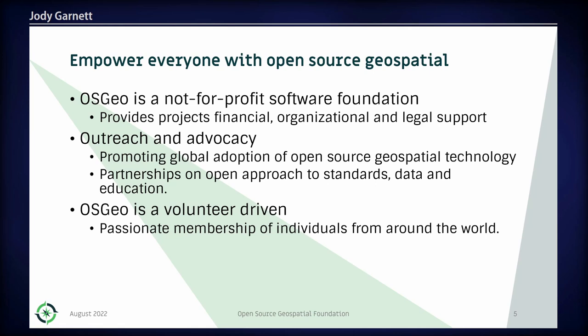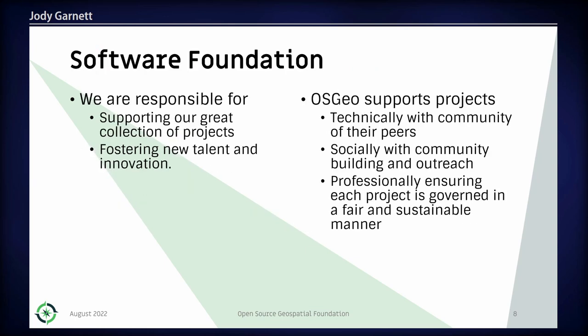The Open Source Geospatial Foundation has a mission and a vision. I want to talk about how that applies to software projects and teams — how we realize this goal when we help people do open source. We're a not-for-profit software foundation. We provide assistance to projects and project teams, do outreach and advocacy at events like FOSS4G. We're volunteer driven — a membership of individuals from around the world — and we support a great collection of projects, looking to foster new talent and new teams.